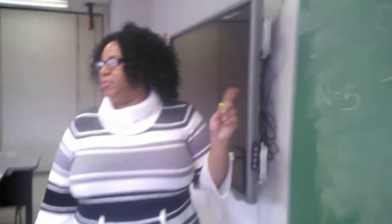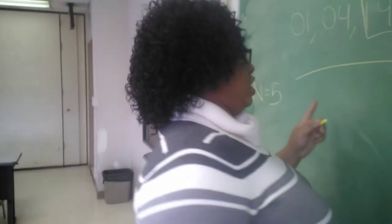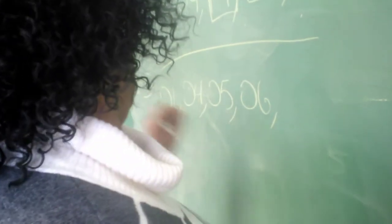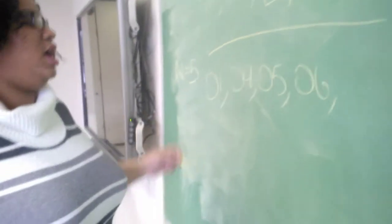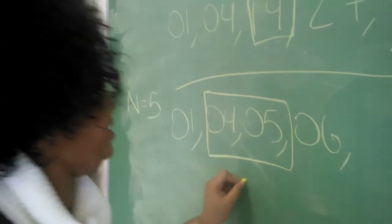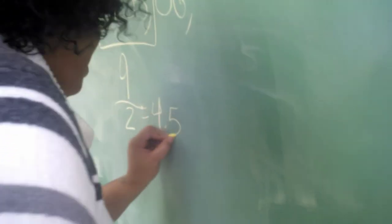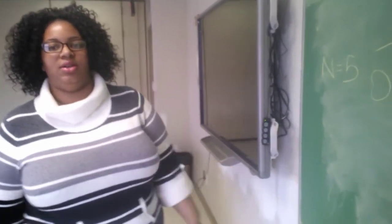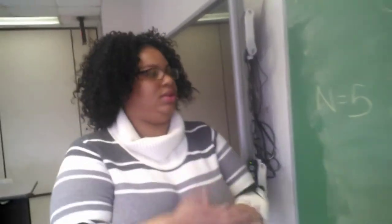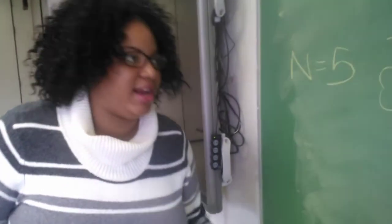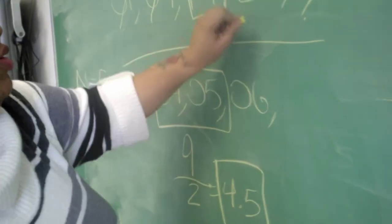19 is our median because our data set is odd. Now, if we had an even number, like 1, 4, 5, 6 — that's 4 numbers — we add these two middle numbers, which gives us 9, and we divide by 2, which gives us 4.5. The easy way to find it is you go from side to side and cross out until you get to the middle. Very good.